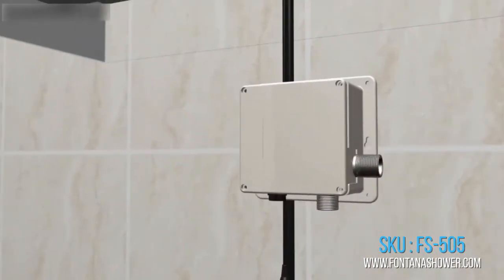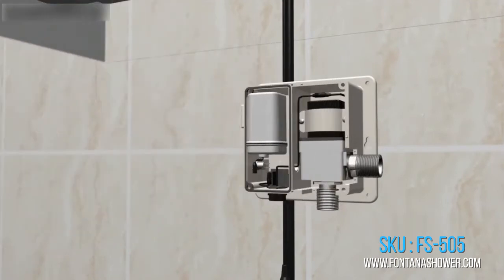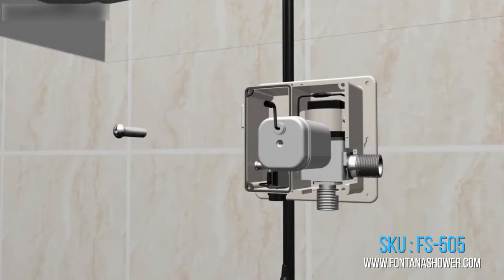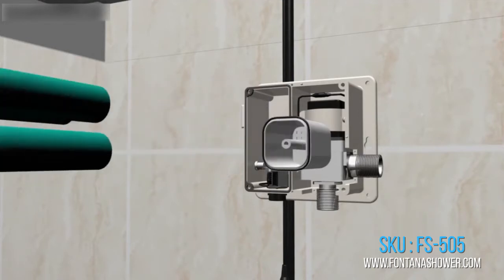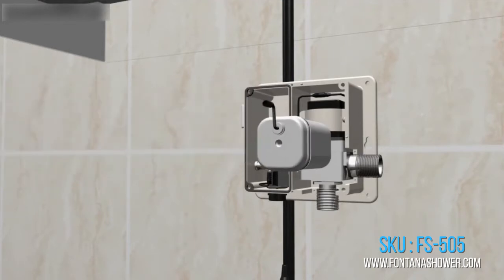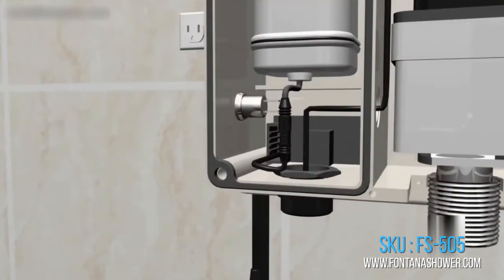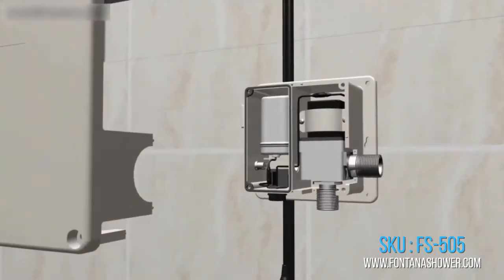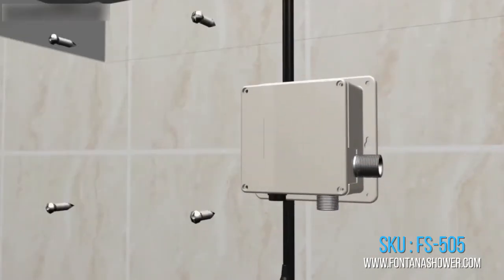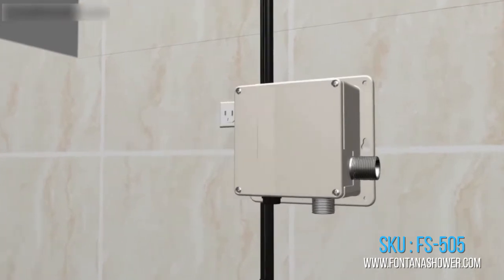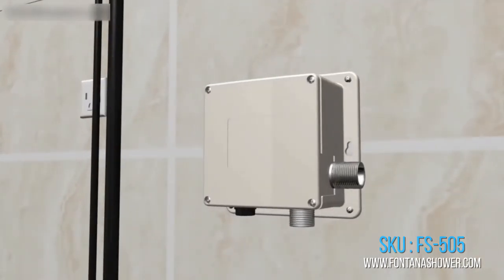Using the automatic faucet immediately reduces water waste by eliminating unnecessary and unattended water flow. Fits all standard U.S. plumbing. Uses four AA alkaline batteries, purchased separately. Water pressure: 0.5 to 7.0 kg/cm² (10-125 PSI).